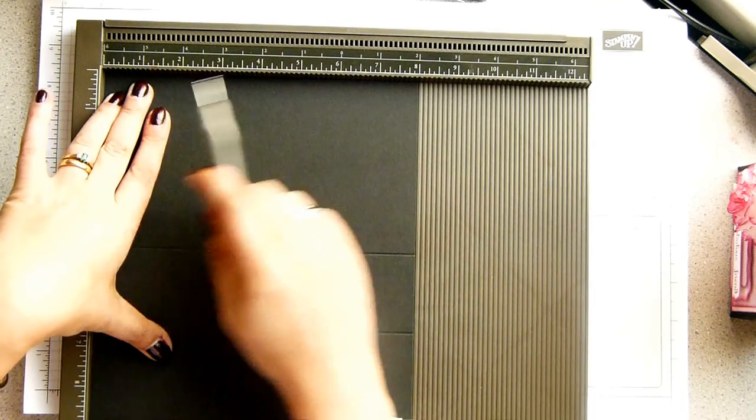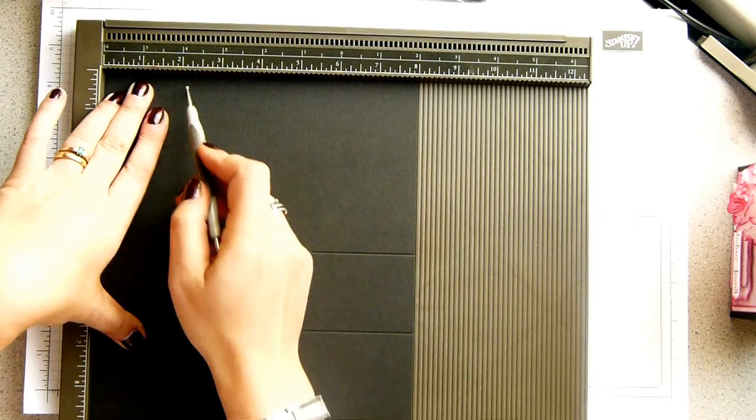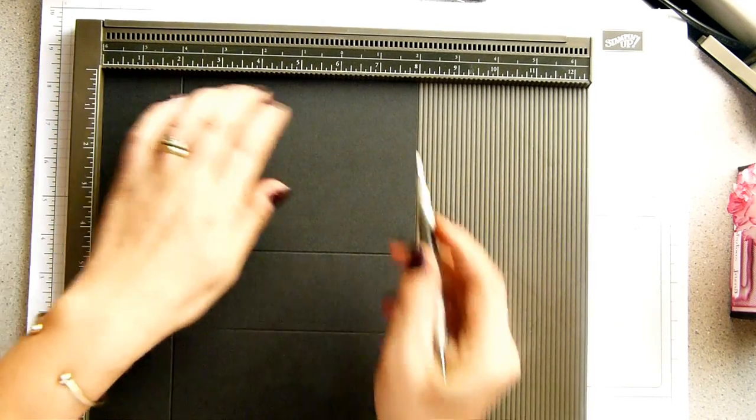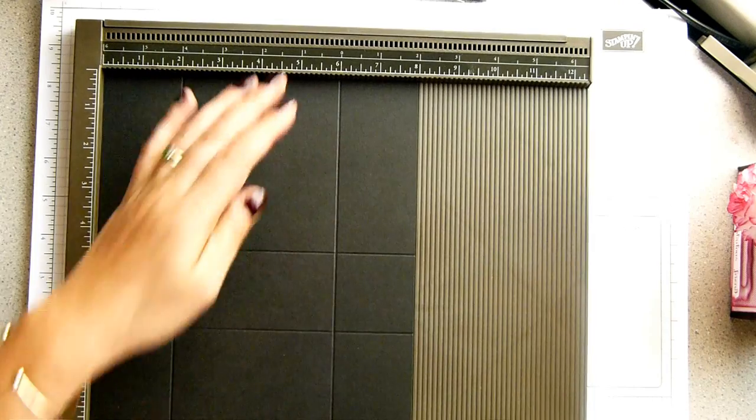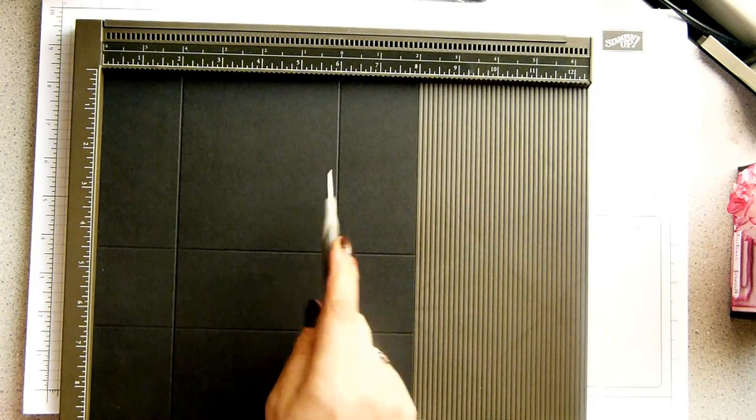Turn this round so you've got the eight inch side at the top, or your 20 centimeter section at the top. Score that at two inches and six inches, and in metric you would score that at five centimeters and fifteen centimeters.